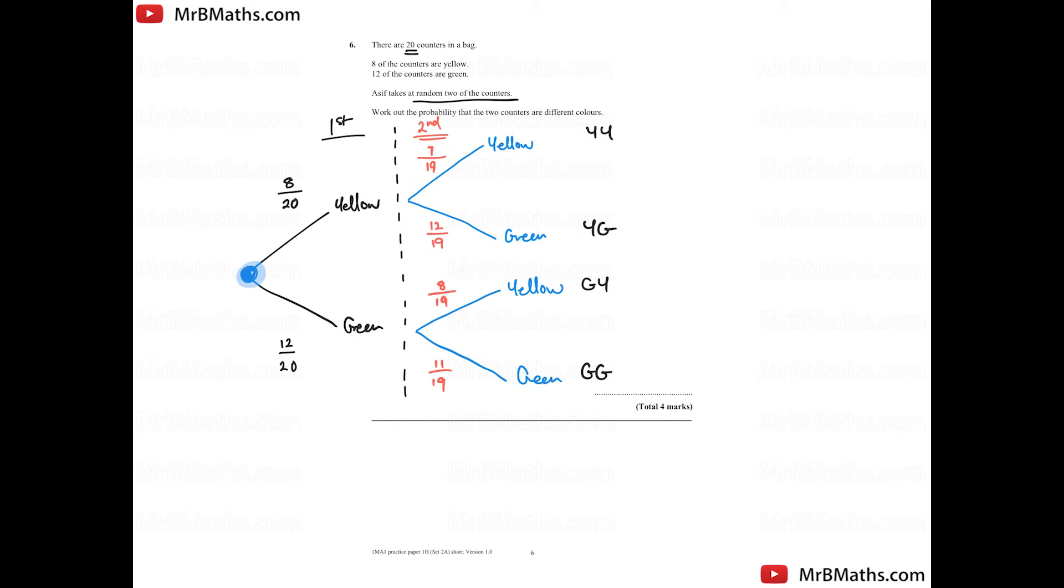Now the question asks, work out the probability that the two counters are different. So that would be YG and GY. Green and green, that would be the same. YY yellow, that would be the same.